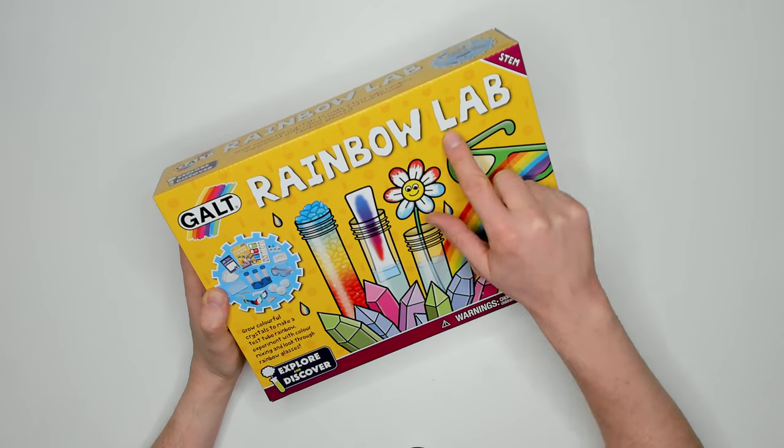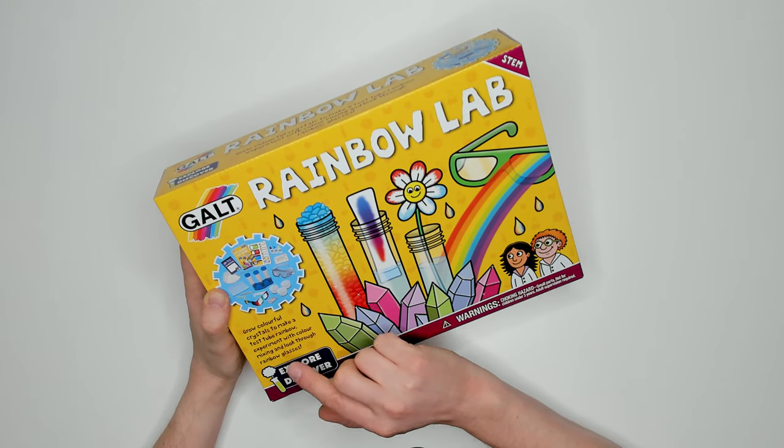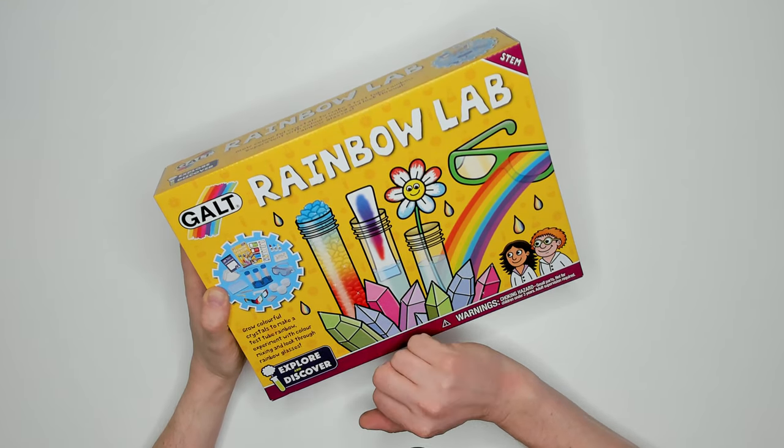This is the Galt Rainbow Lab STEM kit for ages 5 plus. It says on it grow colorful crystals to make a test tube rainbow experiment with color and look through rainbow glasses.